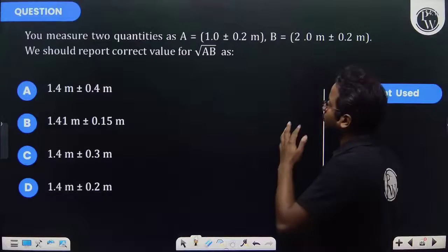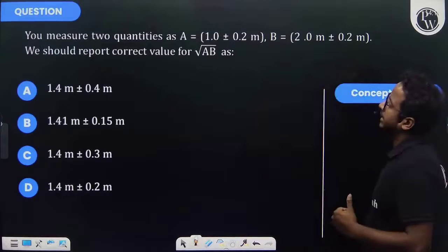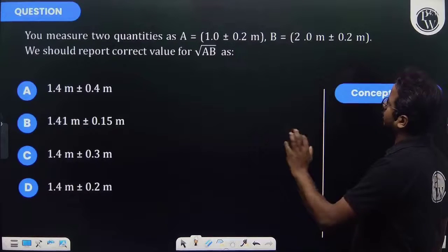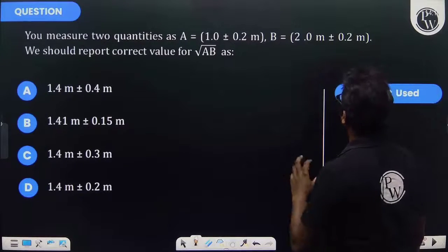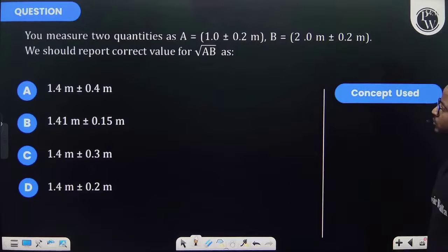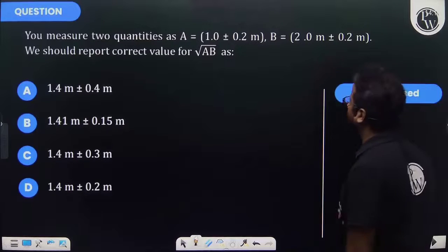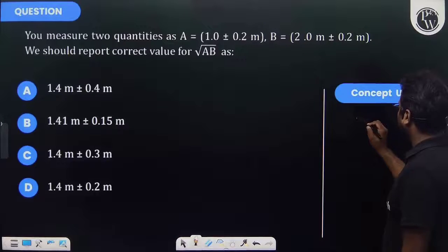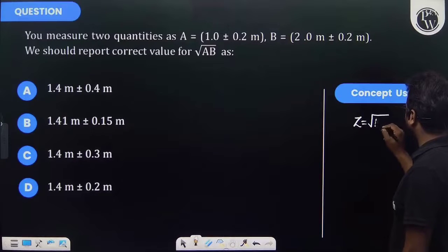Let's take this question. You measure two quantities as A = 1.0 ± 0.2 m and B = 2.0 ± 0.2 m. We should report the correct value for √(AB). Let's suppose Z is equal to √(AB).